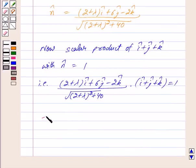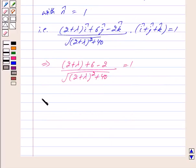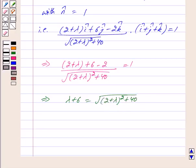This implies (2 plus lambda) into 1 gives (2 plus lambda), 6 into 1 gives 6, and minus 2 into 1 gives minus 2, upon under root of (2 plus lambda) whole square plus 40. So in the numerator we get lambda plus 6, equal to under root of (2 plus lambda) whole square plus 40. Squaring both sides we get (lambda plus 6) whole square equal to (2 plus lambda) whole square plus 40.